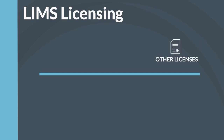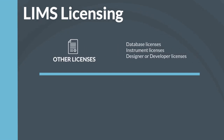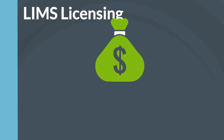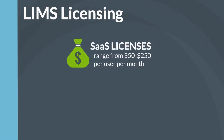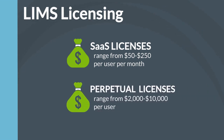Other licenses that may be needed include database licenses if they are not bundled with the LIMS, instrument licenses if the LIMS requires interfaced instruments to have a LIMS license, and designer or developer licenses for your LIMS developers. The costs of LIMS user licenses range from $500 to $250 per user per month for SaaS licenses, to $2,000 to $10,000 per user for a perpetual license. It is critical that you consider all the different licenses you may need when seeking to establish your full LIMS project costs, not just the user licensing.